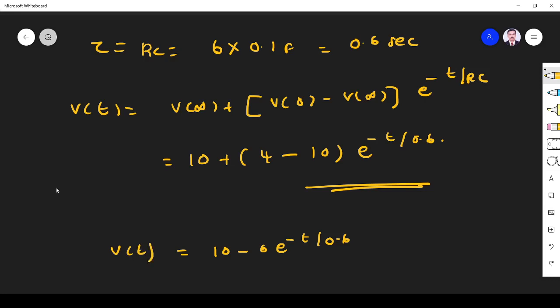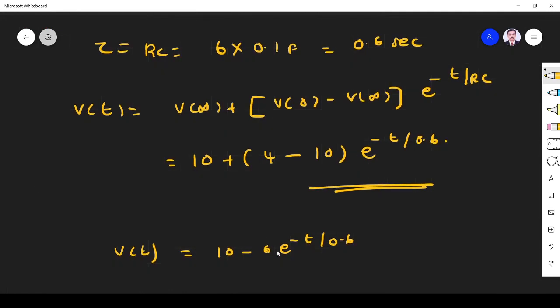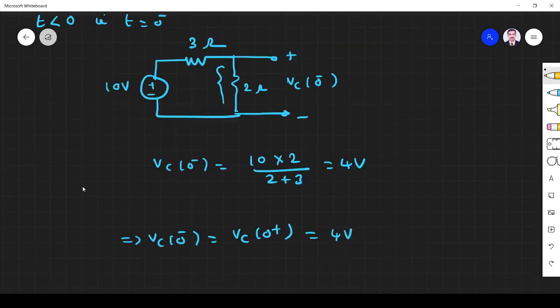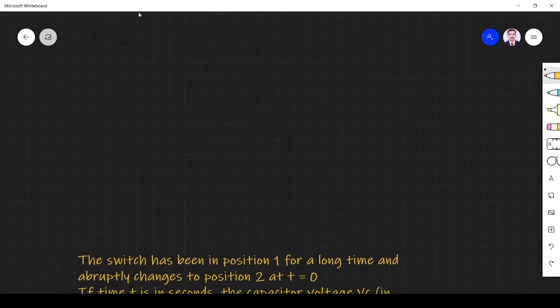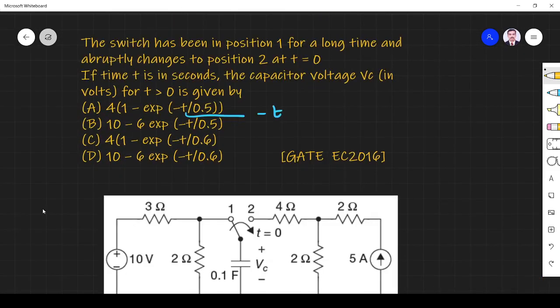So which option is correct? 10 minus 6e^(-t/0.6). Let us see, 10 minus 6e^(-t/0.6), option D is the right answer. Thank you.